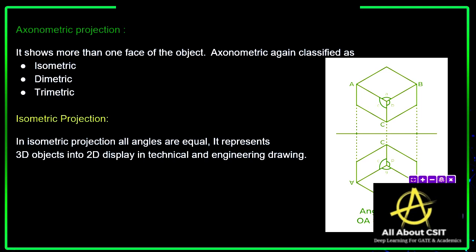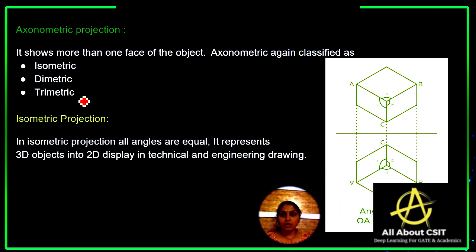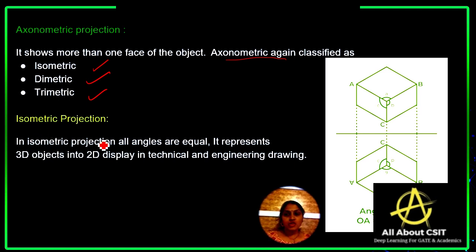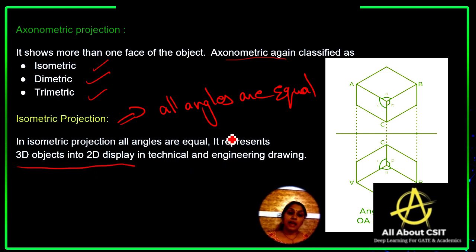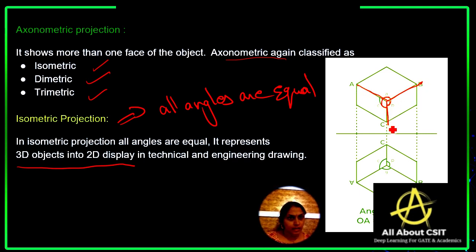The axonometric view shows more than one face of the object. It is again classified as isometric, diametric, and trimetric. In isometric projection, all angles are equal — OA, OB, and OC are all of equal size — and it represents a 3D object as a 2D object in technical and engineering drawing.